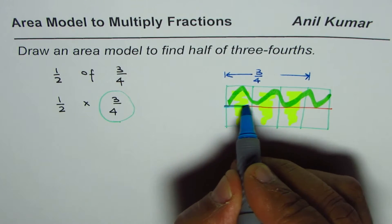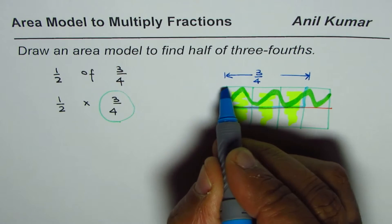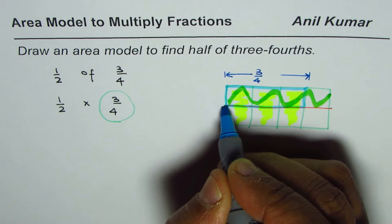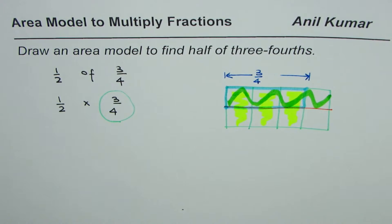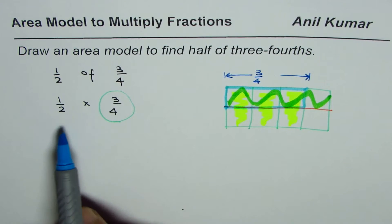When you select half of it, the common portion which is between the rows and columns is the area of our interest, since it is half of three-fourths selected.